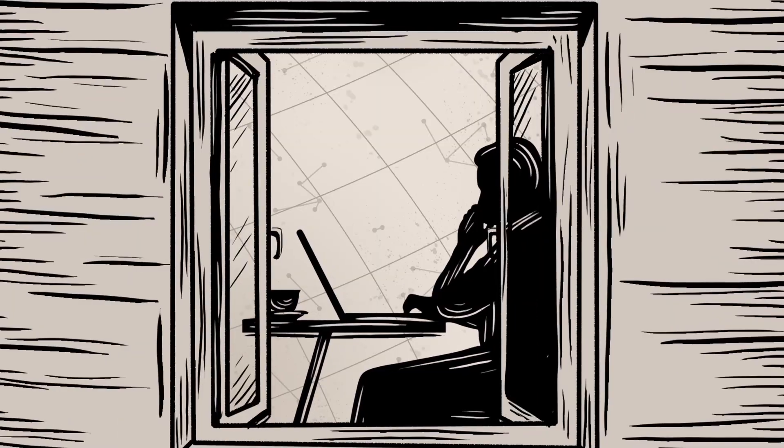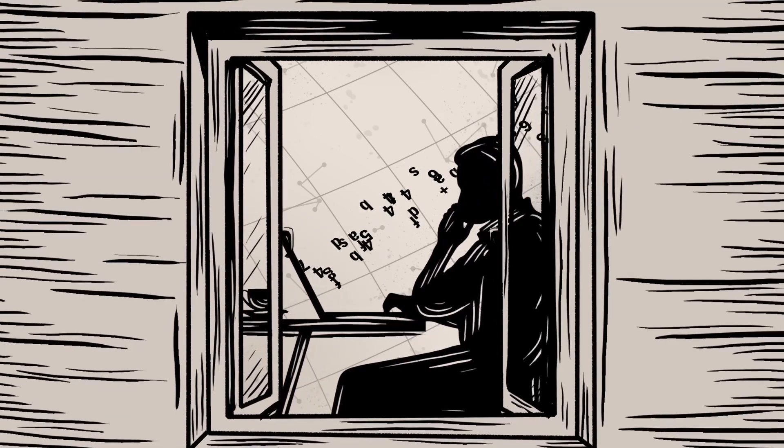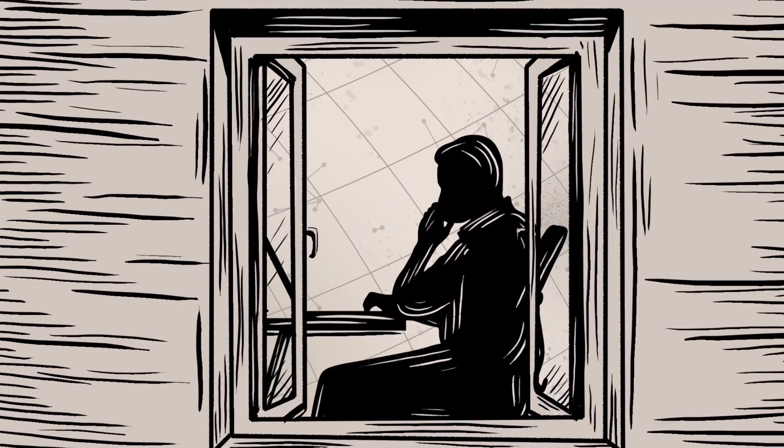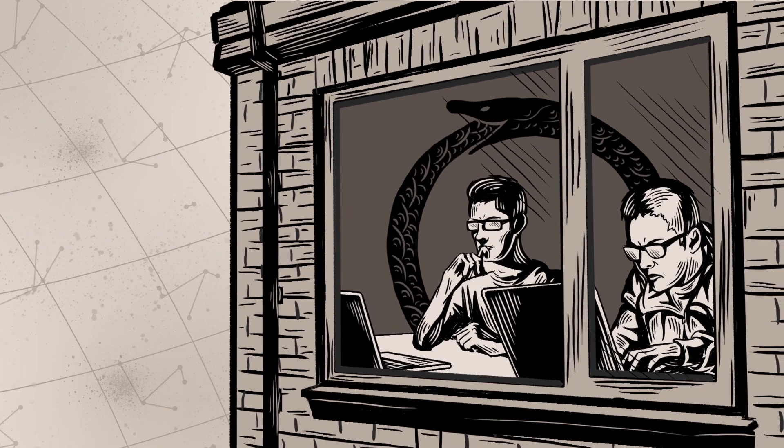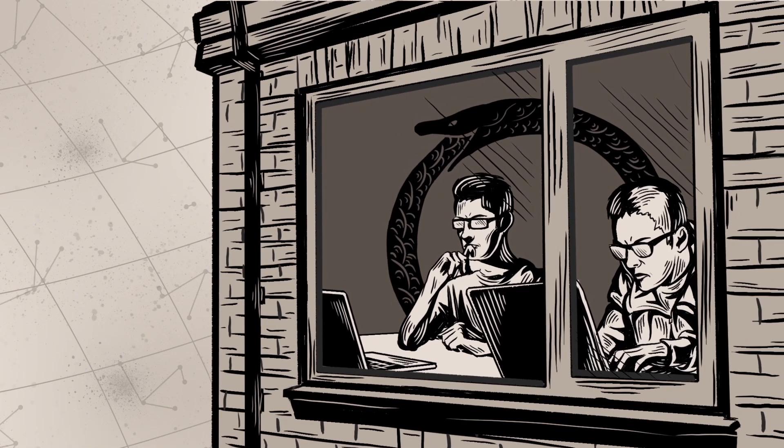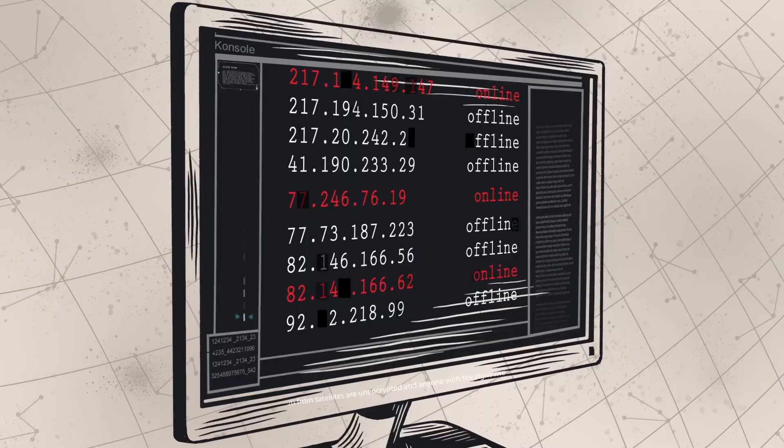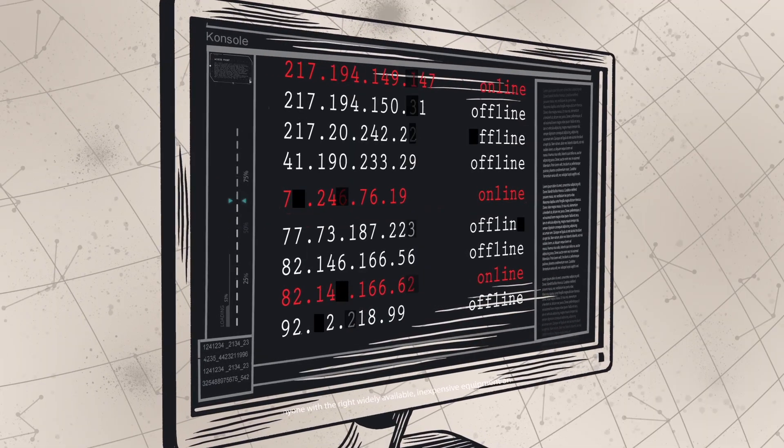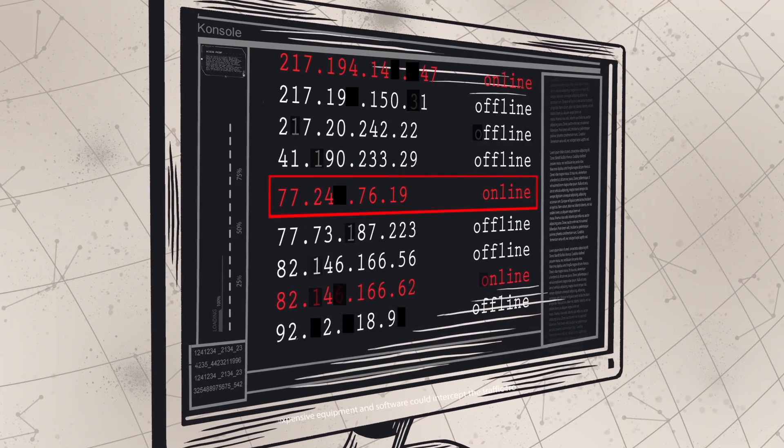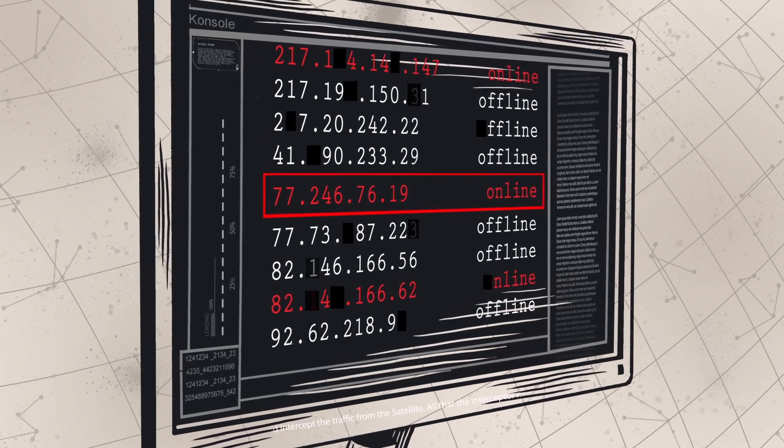Using this flaw in the satellite traffic transmission technology, the Turla operators have learned how to completely hide their command and control servers. First, they listen to the downstream traffic from the satellite to identify the IP addresses of online users.